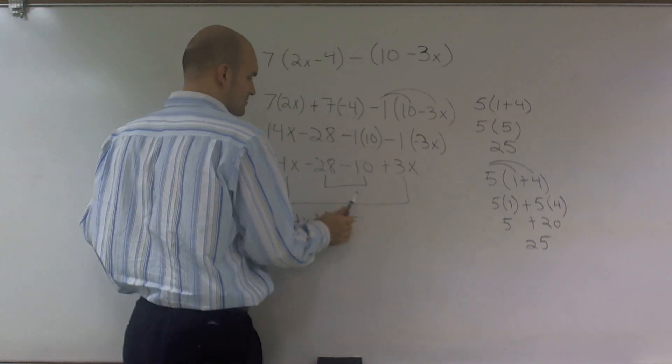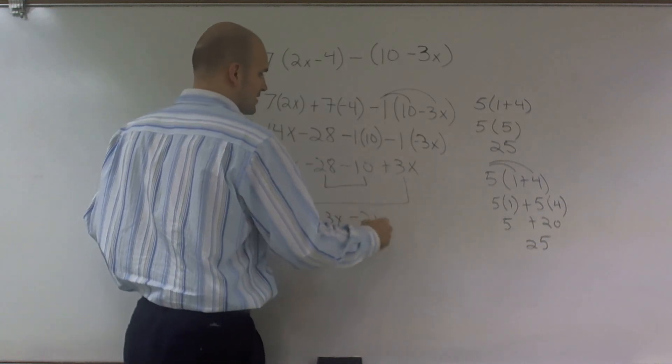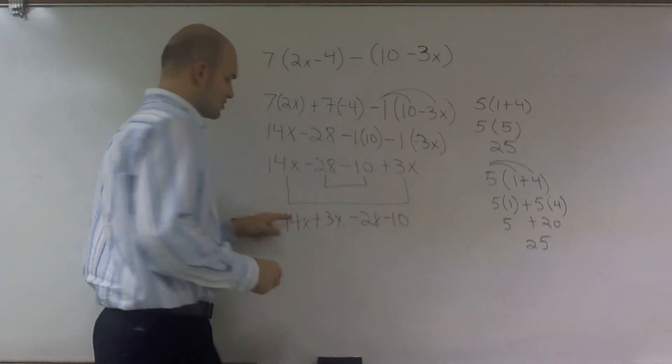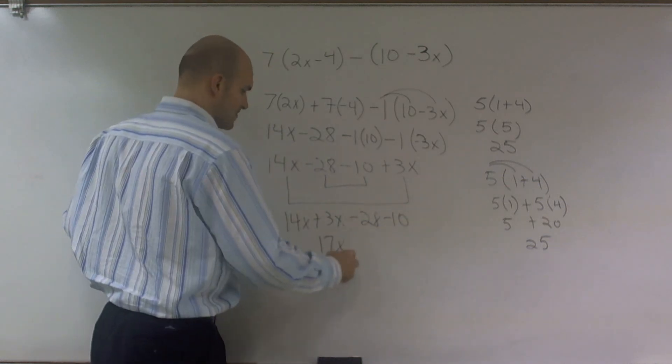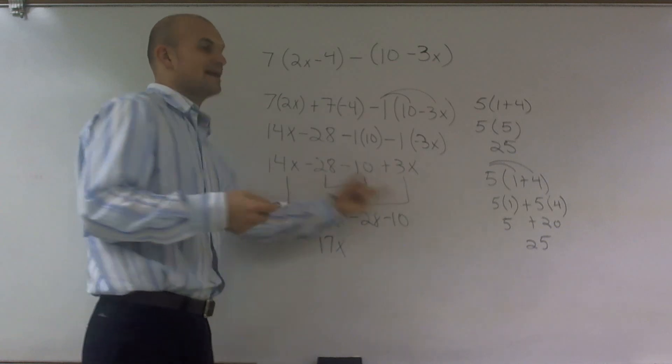I'm going to rewrite this as 14x plus 3x minus 28 minus 10. So 14x plus 3x is 17x, and negative 28 minus 10.